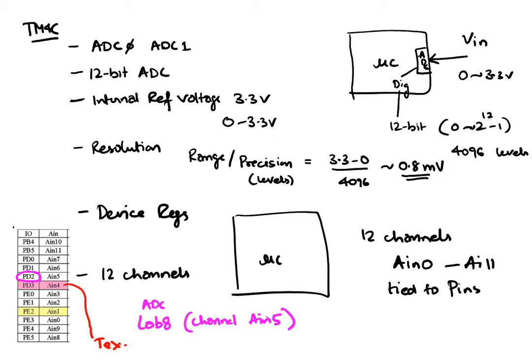There are several examples in the book that use PE2. This might be something you want to use if you want to keep all of your inputs on one port — eventually when you get to lab 10, you will put your buttons on PE0 and PE1, and you could put your analog input on PE2, so all your inputs are on one port. But that's up to you.